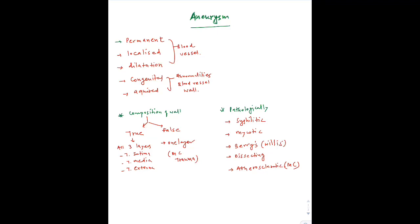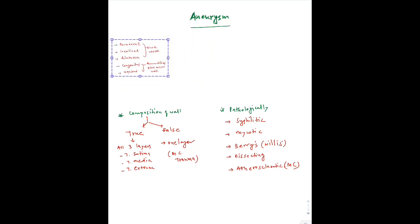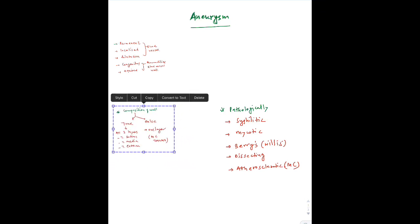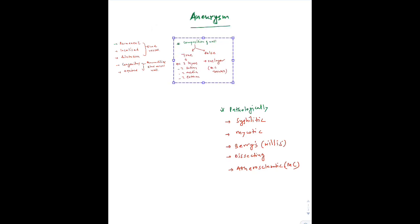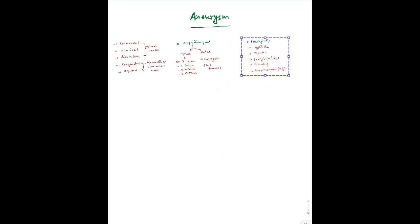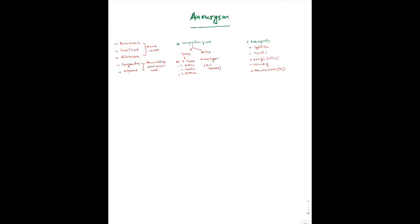We saw classification according to wall composition, then the pathological classification. Now we look at classification according to shape. Basically in many books you will see three types mentioned, which are fusiform, saccular, and mixed. But there are some additional types as well: cylindrical and serpentine.